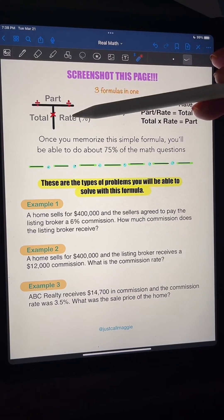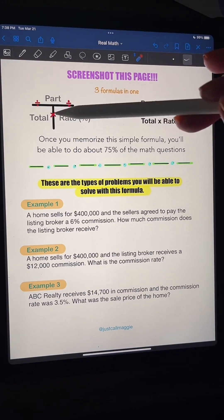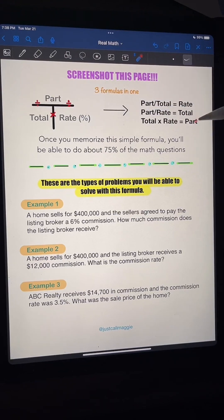Now, when I have a part and a percent, I'm going to divide, and that's going to equal my total. Okay? And anytime I have a total, I'm multiplied by a rate, and that gives me the part.